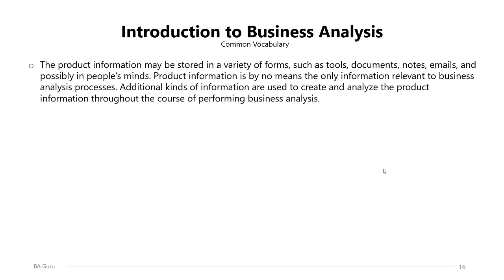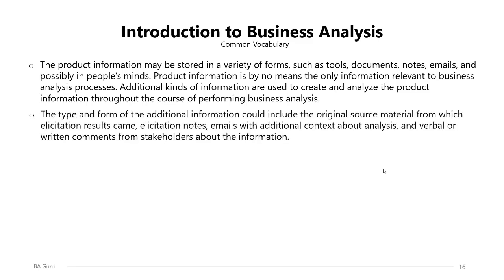Product information may be stored in a variety of forms such as tools, documents, notes, emails, and possibly in people's minds. Additional kinds of information are used to create and analyze product information throughout business analysis. This additional information could include the original source material from which elicitation results came, elicitation notes, emails with additional context about analysis, and written comments from stakeholders about the information and how it was obtained.